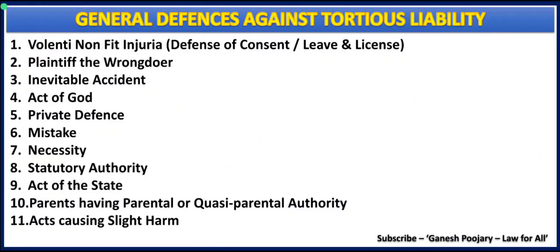Here is the list of general defenses available against tortious liability: volenti non fit injuria, plaintiff the wrongdoer, inevitable accident, act of God, private defense, mistake, and necessity. We have discussed all of these concepts along with case laws in independent videos. Today we are discussing the eighth defense — statutory authority. Defenses nine through eleven, such as act of the state, parental authority, and acts causing slight harm, are covered in the introduction video.